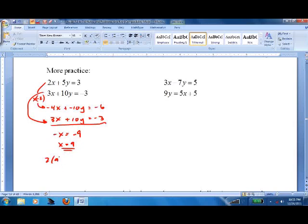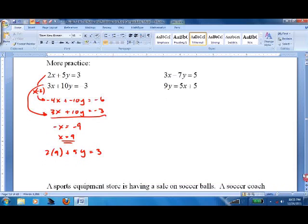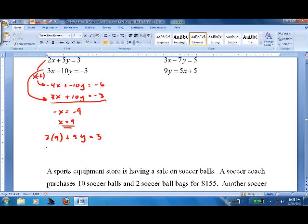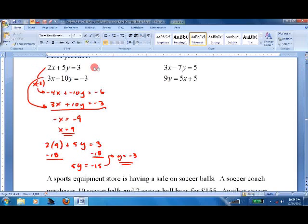2 times 9 plus 5y equals 3, minus 18, minus 18. This side, 5y equals negative 15. y equals negative 3. Write it in, 9 comma negative 3.